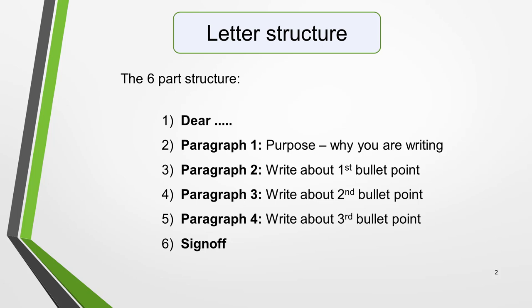Ideally your letter should consist of four paragraphs with a greeting at the beginning and a sign-off at the end. Start with the greeting, which will be 'Dear' whoever you're writing to. Then in paragraph 1 state the purpose of the letter — that is your reason for writing. In paragraph 2 write about the first bullet point. In paragraph 3 write about the second bullet point. And in paragraph 4 write about the third bullet point. Then finally sign off your letter.